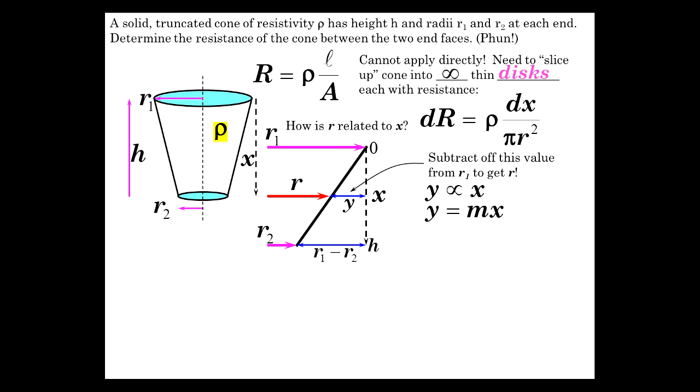That's a pretty simple relationship, actually. y equals mx. That's all. And m equals rise over run. Well, the rise is r1 minus r2. And the run, the delta x, is h.